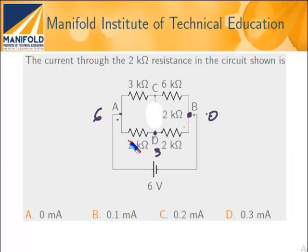So the current through this will be 6 by 4, because these two things are in series. So 6 by 4 into 2, which is 6 by 2, which is 3. So the potential drop is 6, this is 3, and this is 0.